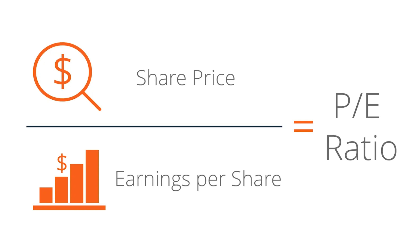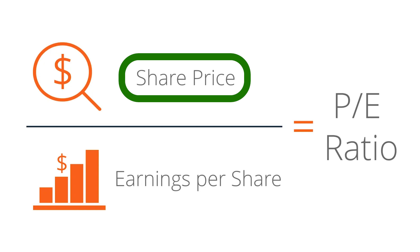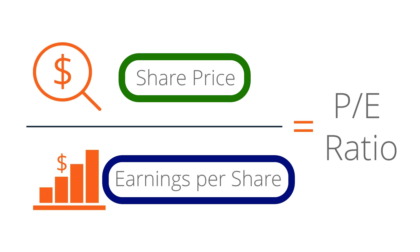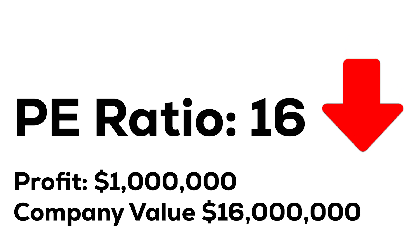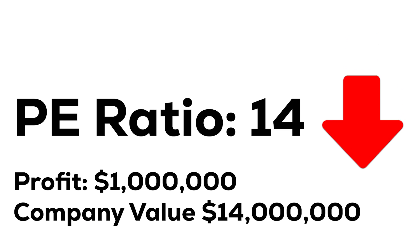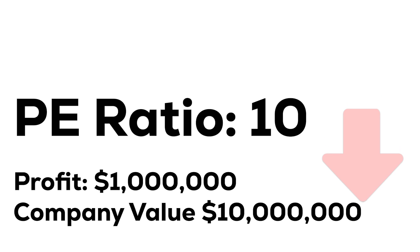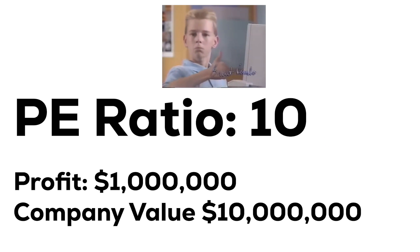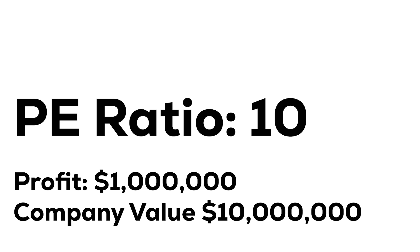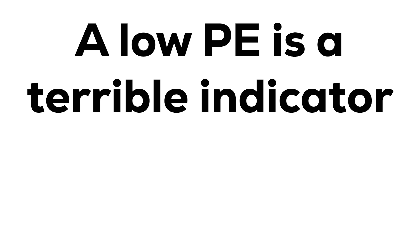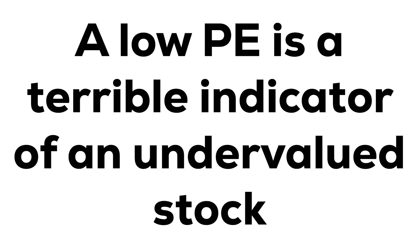The general point of the P/E ratio is that it measures the price a company is trading at versus how much net income that company is making. So a low P/E ratio means the company is making a lot of profits compared to its price, and people take that as a good indication that it's undervalued. But most of the time a low price to earnings is a terrible indicator of an undervalued stock.